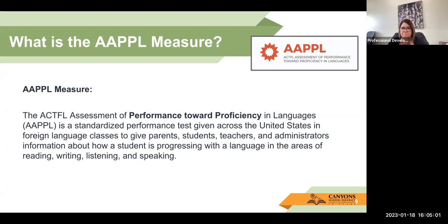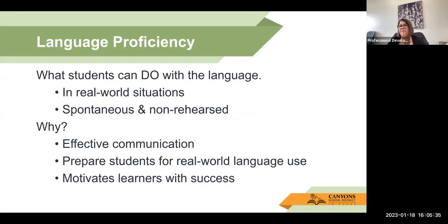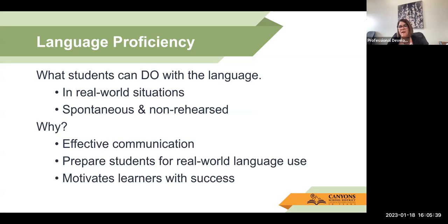The APPLE measures and assesses the following modes of communication in the following grade levels. We start the APPLE test in third grade and test through ninth grade. We start in third grade with interpersonal listening and speaking, and then add in reading, listening, and writing in the various grades. Remember that the APPLE test is only given once a year. In Utah, we give it in the fall, and usually we get those results and reports back sometime in January.